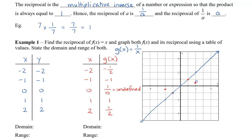We only get 4 points here, but if we pick some more — say we had one half — then the reciprocal of one half would be 2. And same thing with negative one half: the reciprocal of negative one half would give a y value of negative 2. So we get a graph that looks something like this.